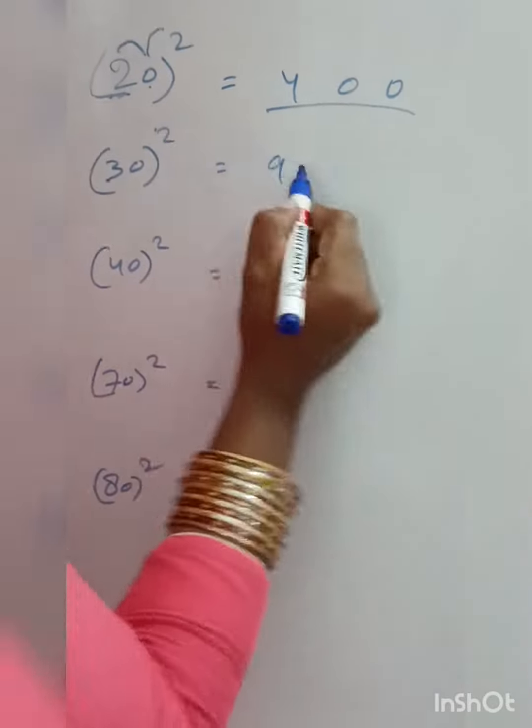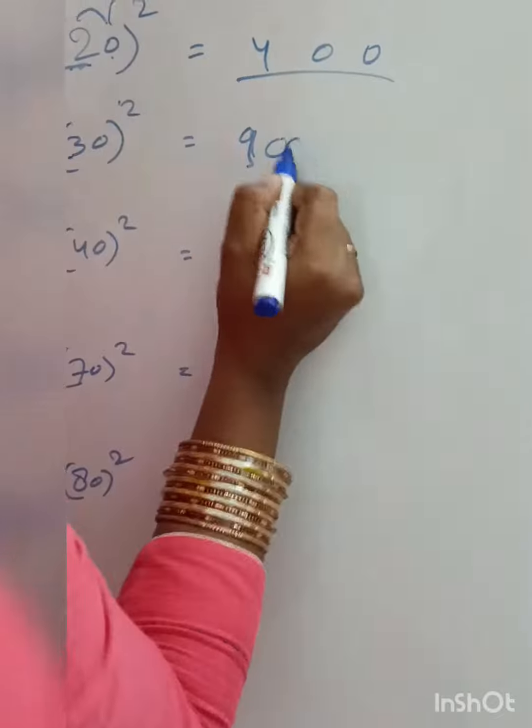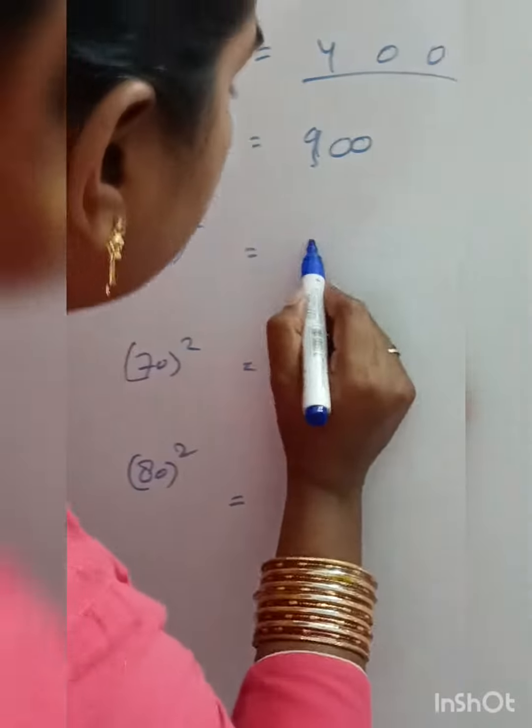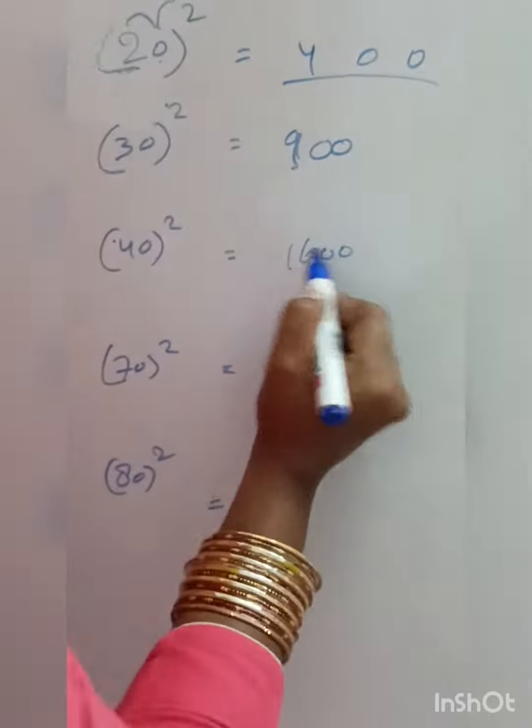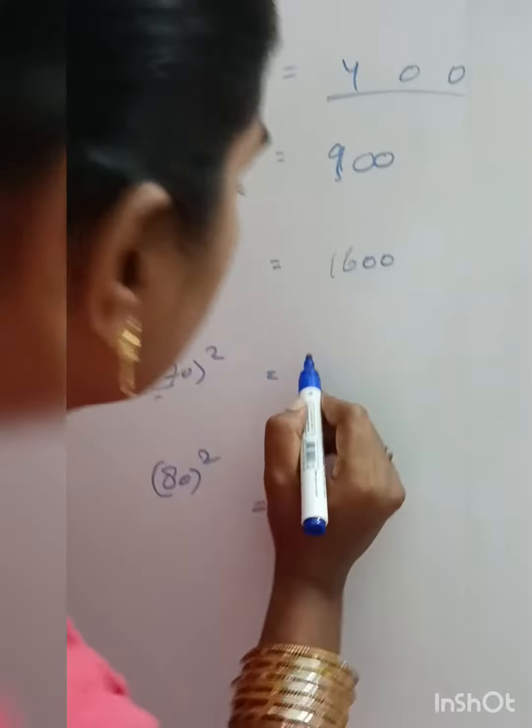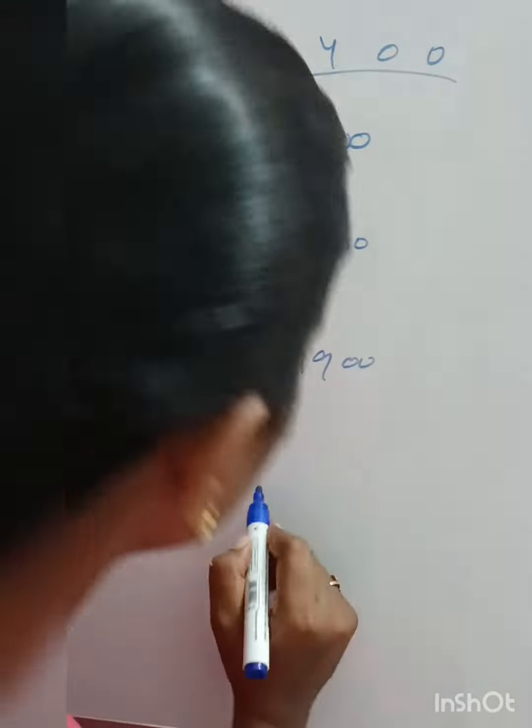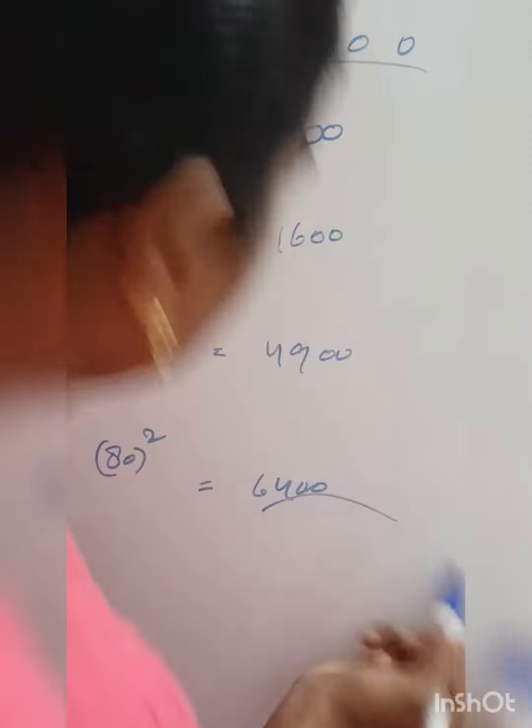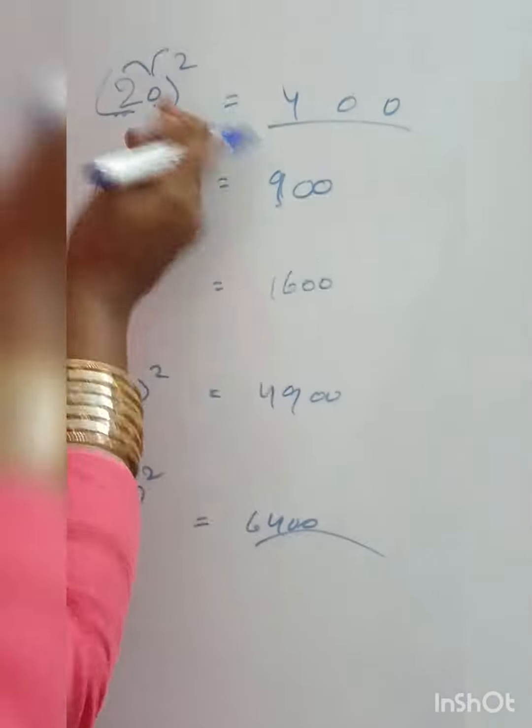3 times 3 is 9. 0 times 0, here it's 900. This is the same method.